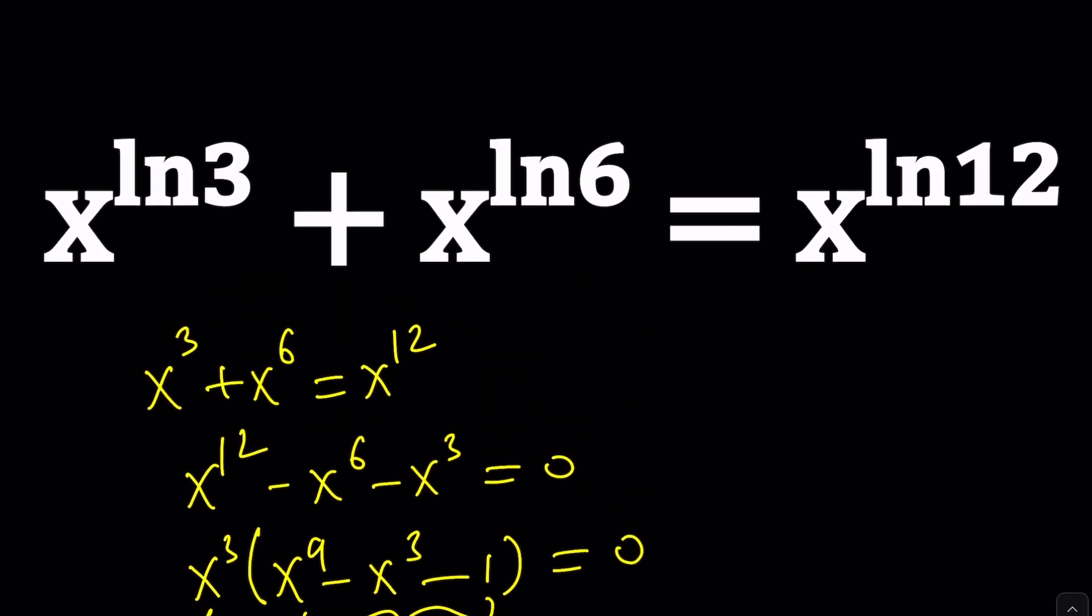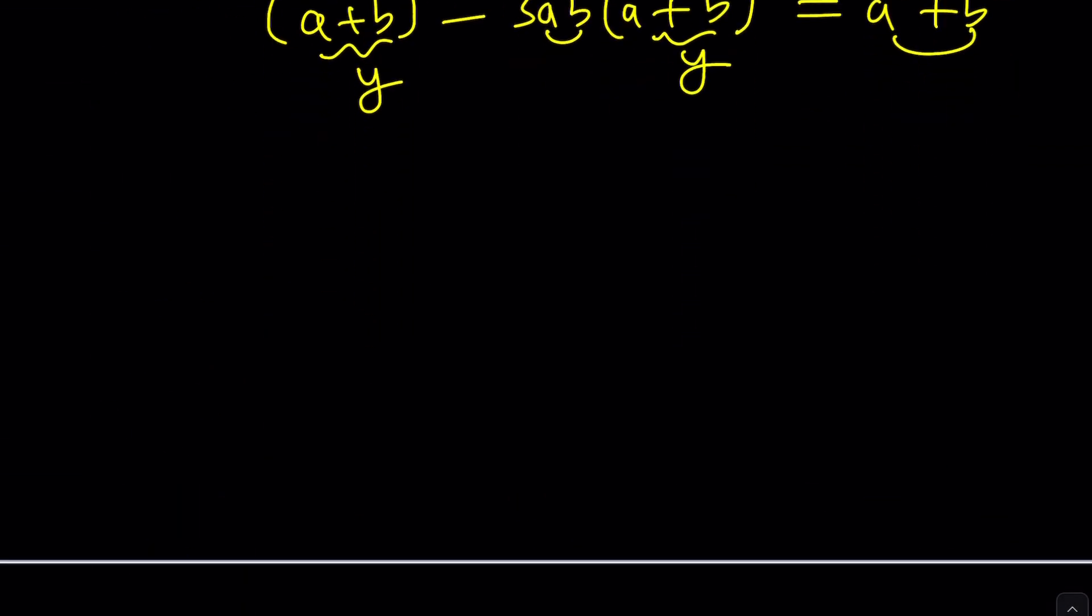But this one is crazy. Because we have the ln of a number, ln of a number, ln of a number. In other words, you have something like this, where a, b, c are not integers. So what can you do in that case?